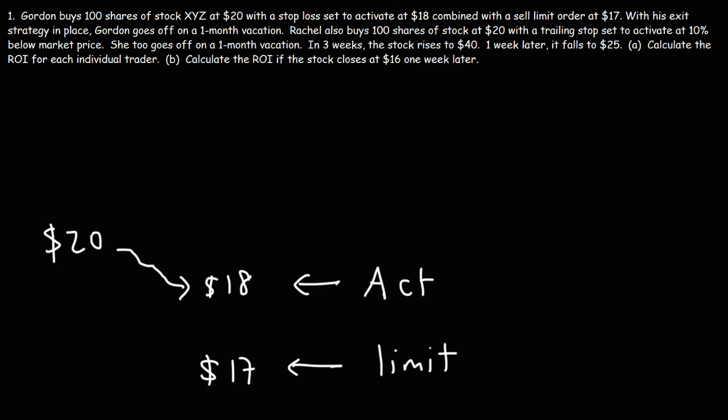It is designed to protect a stock trader from heavy losses. In this case, the most that Gordon could lose is $3 per share. The system is going to try to sell his stock at $17 or better. Now, the system is not perfect. Sometimes the stock can fall so fast, especially if there's a lot of sell orders in place, that it can go past the $17 limit order before that order is fulfilled.